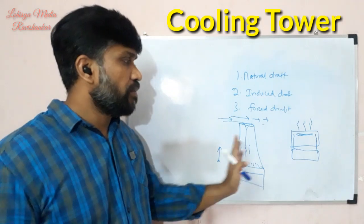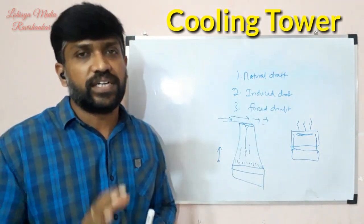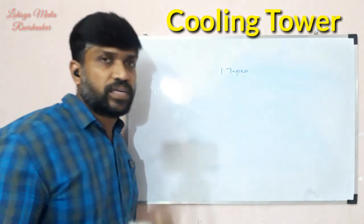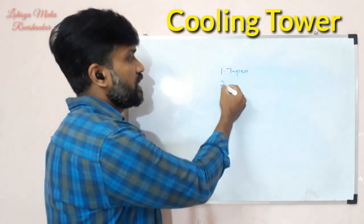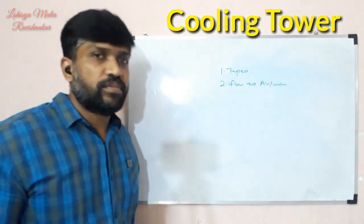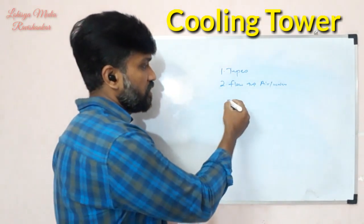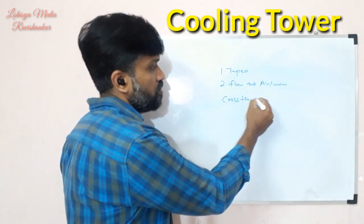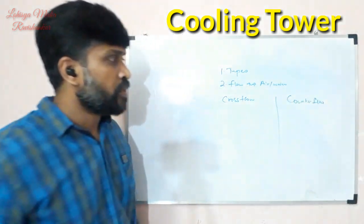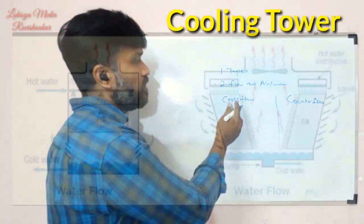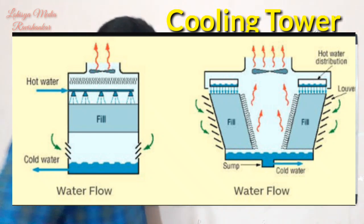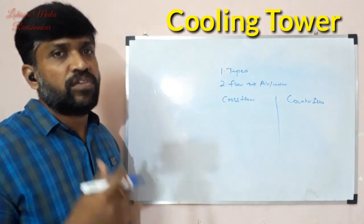To summarize, the three basic types are: natural draft, induced draft, and forced draft cooling towers. The second classification is by flow type: air flow type and water flow type. Water flow types include cross flow and counter flow. Cross flow induced draft, cross flow forced draft, counter flow induced draft, and counter flow forced draft are the main sub-categories.